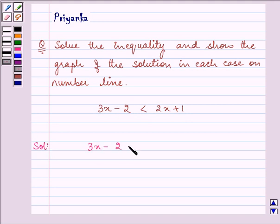So, 3x minus 2 is less than 2x plus 1. On subtracting 2x from both the sides, we have 3x minus 2 minus 2x is less than 2x plus 1 minus 2x.